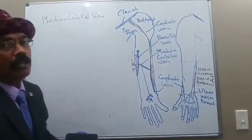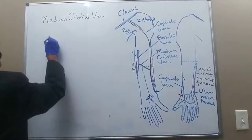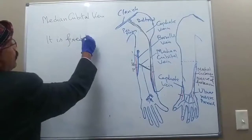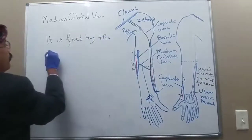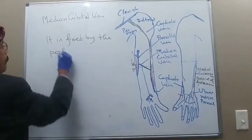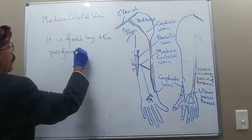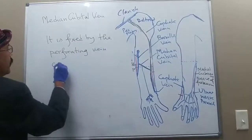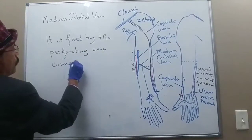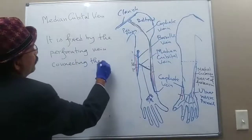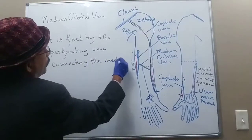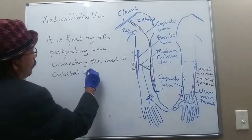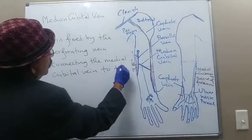This vein is relatively fixed — it does not move easily — because it is fixed by a perforating vein which connects the median cubital vein to the deep vein.